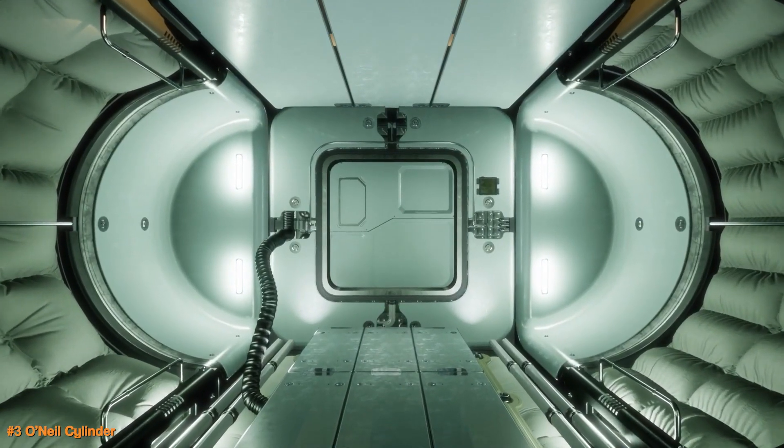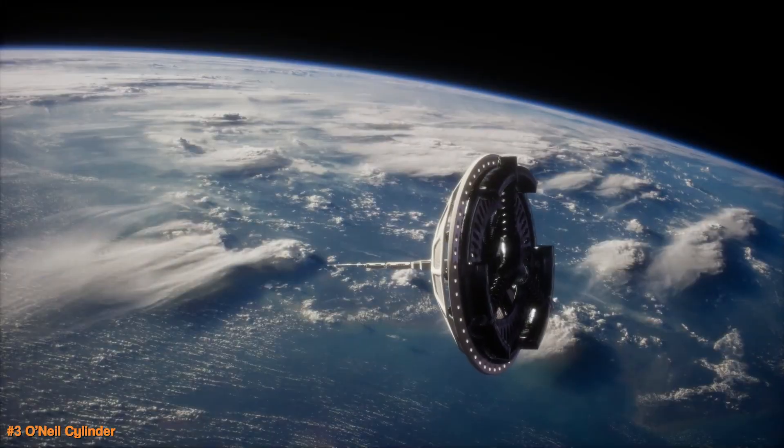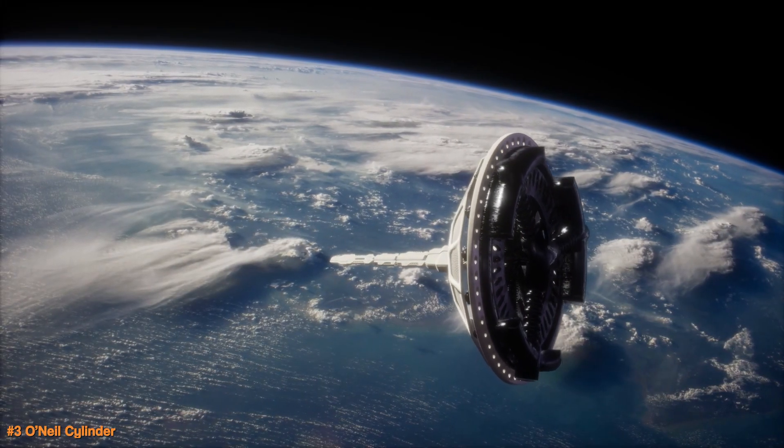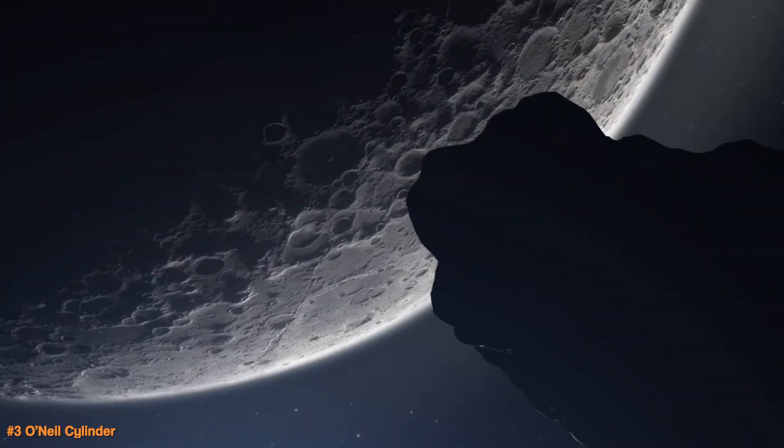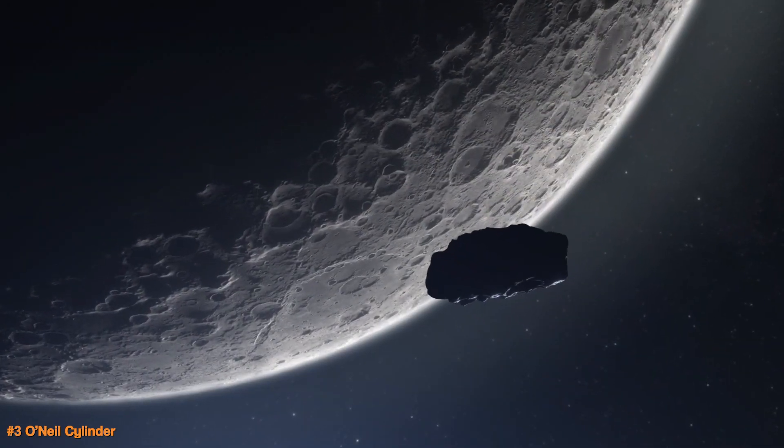Each cylinder can hold thousands of people giving them a safe place to live in space. These space homes could help with overpopulation and give humans a way to live beyond Earth like starting new towns in the sky. And since we're on the subject of interplanetary travel, we might need wormholes if we want to achieve it.